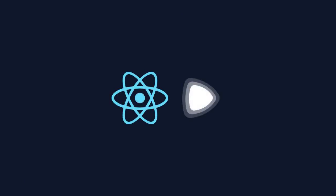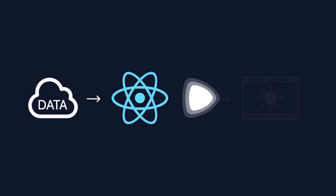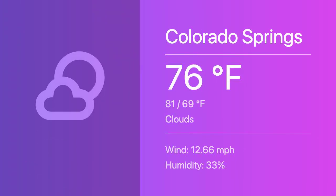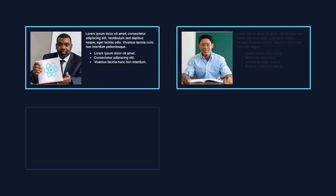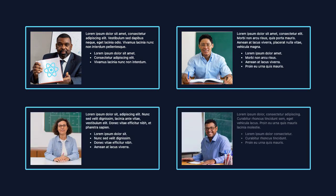Using React with Remotion offers a unique advantage in fetching and displaying dynamic data at render time, just like on a website. For example, a current weather report can be created with a data fetch and designed weather components. It could also be helpful for a large set of training modules where there's a consistent format that could be automated.